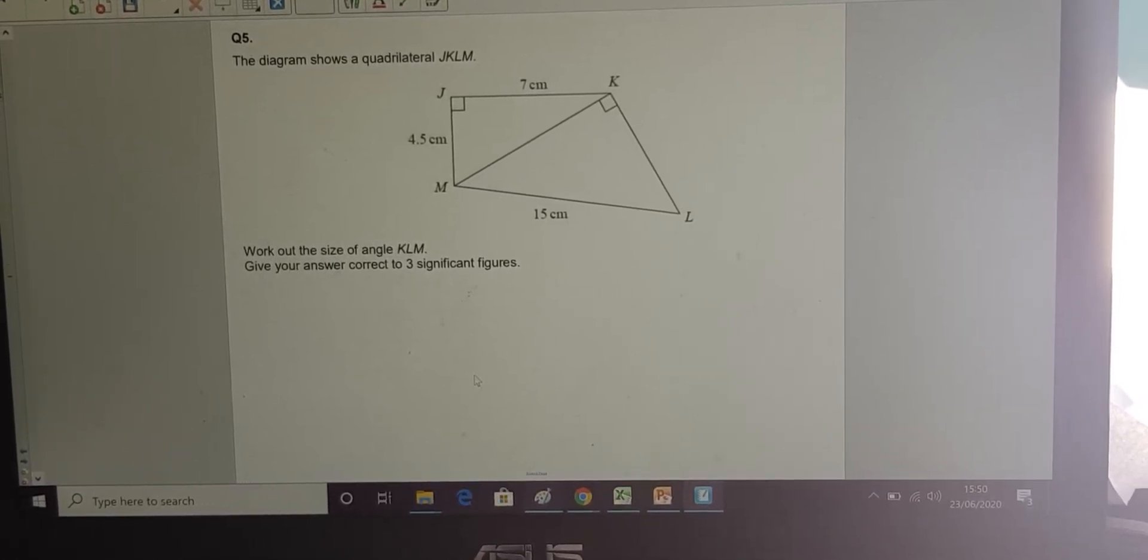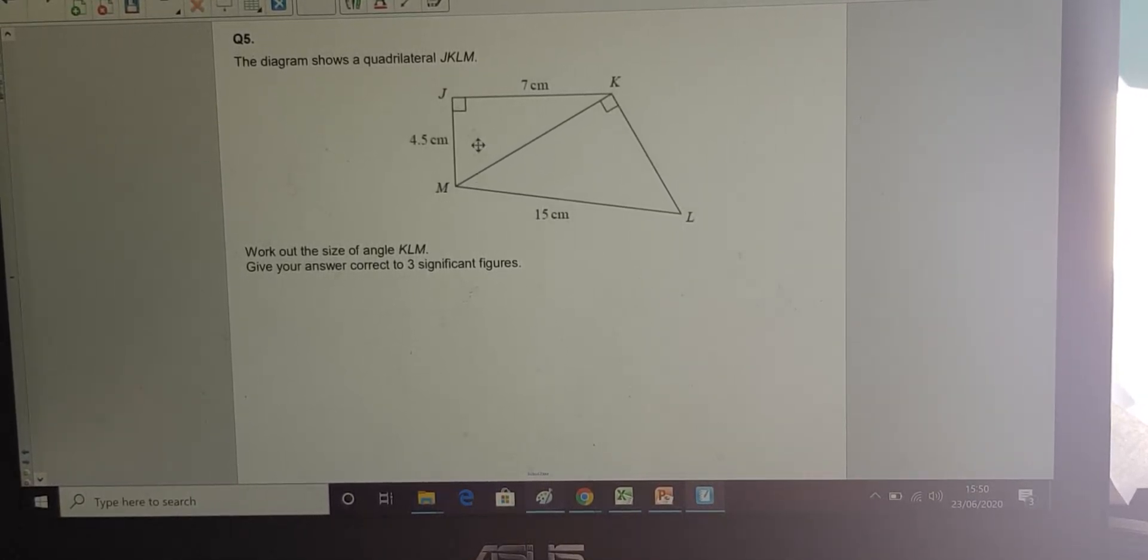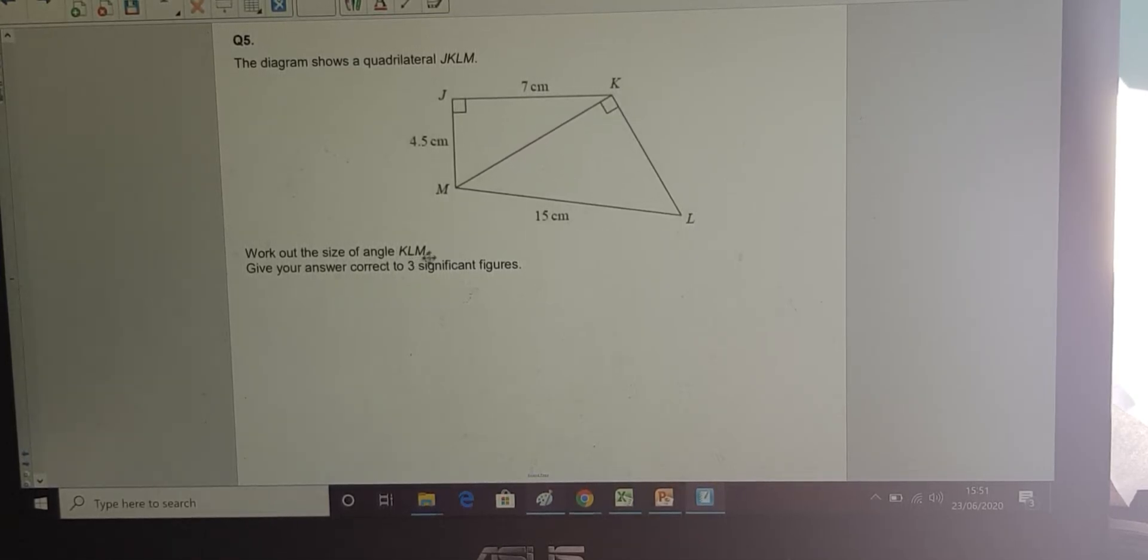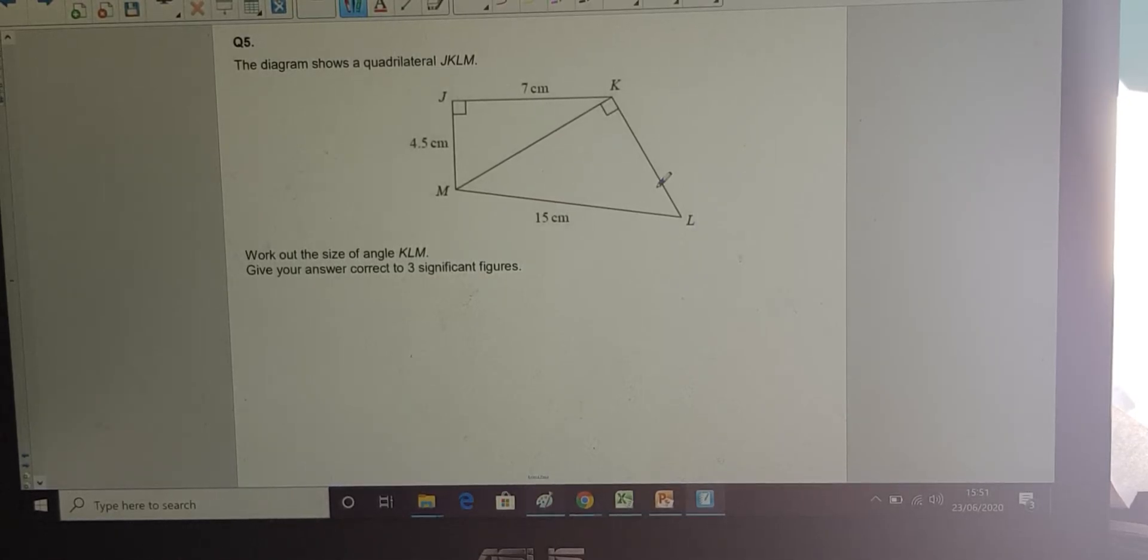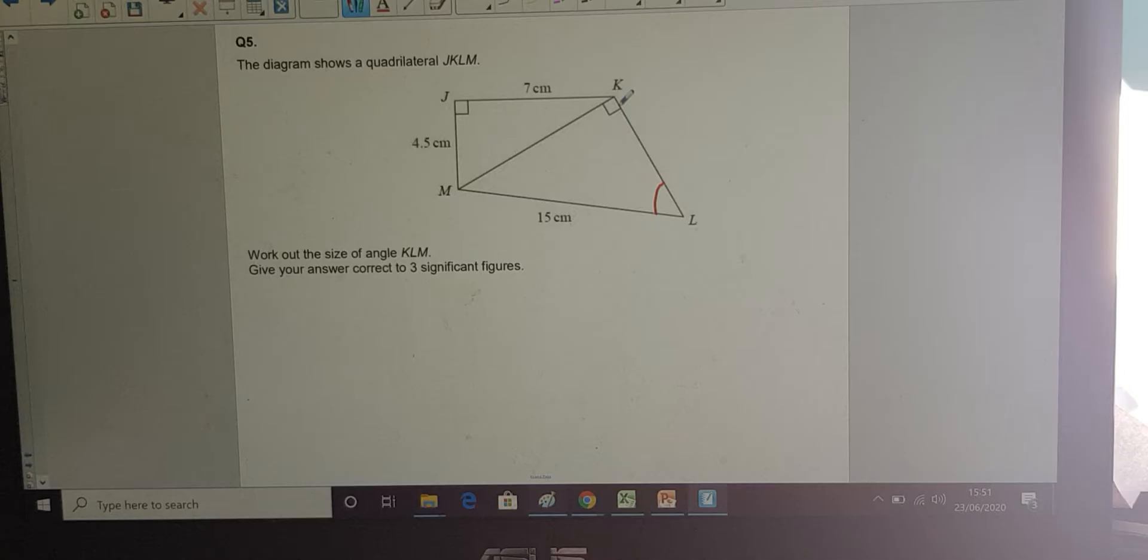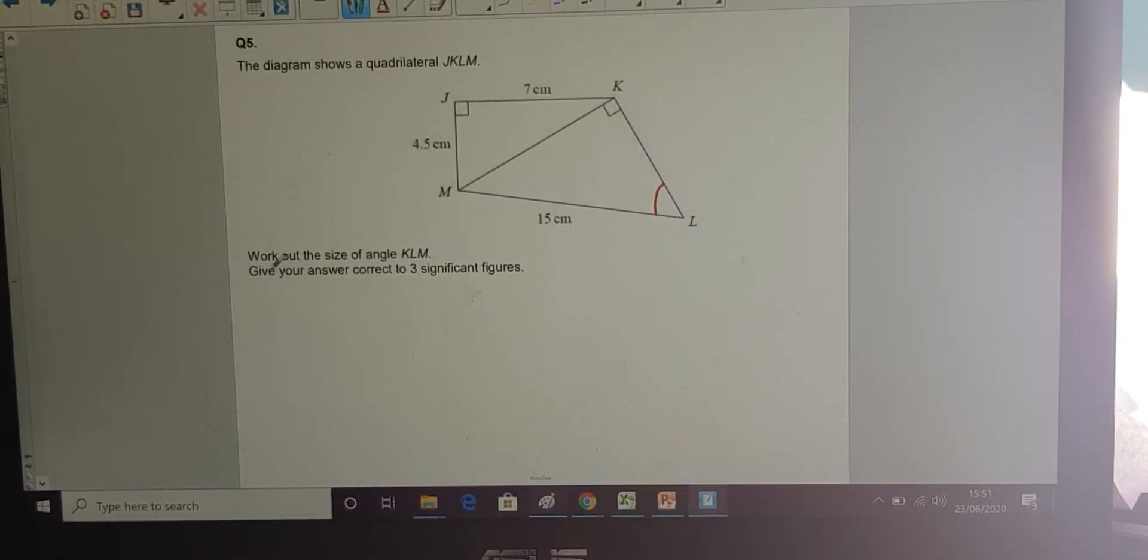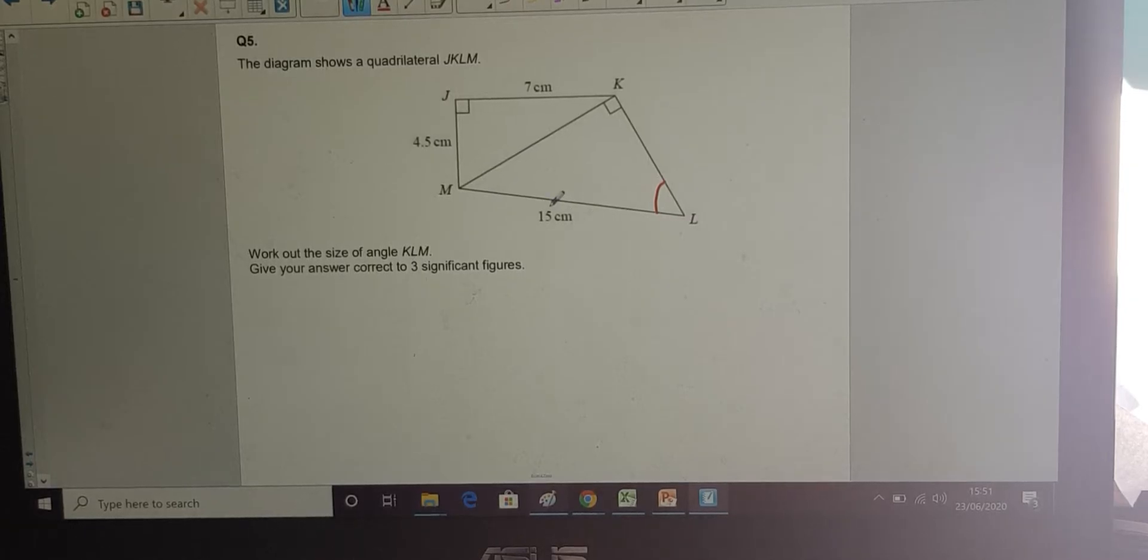Okay, question five. The diagram shows a quadrilateral, a four-sided shape, J, K, L, M. Work out the size of angle K, L, M. So it's this angle here. If you're confused with those angles where they're represented, always follow it with a line, K to L to M. Okay, so it's that angle that we want. Give your answer to three significant figures.